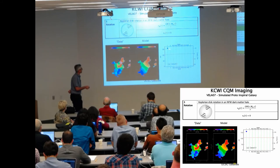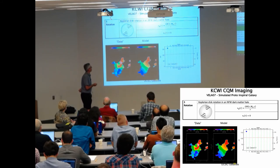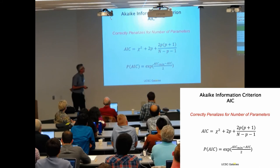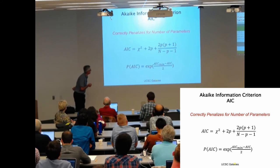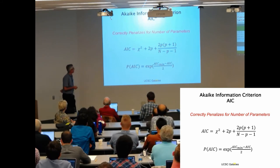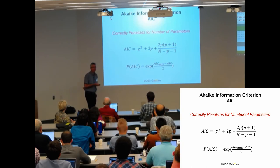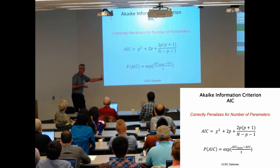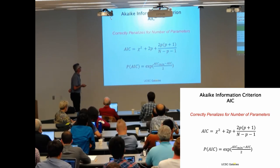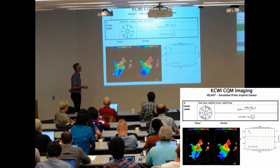So if the AIC goes down, that means the next model, the more complex model, is a better model. So this is adding a non-azimuthally modulated linear radial flow. So you get more complicated velocity profiles, twisted, and the AIC goes down.